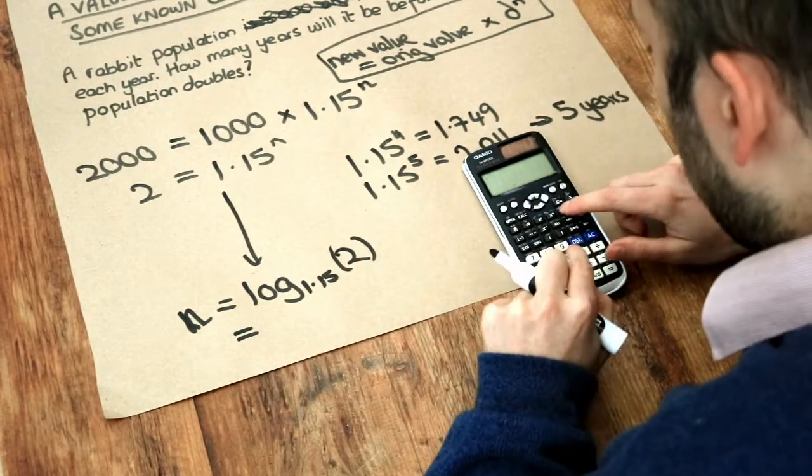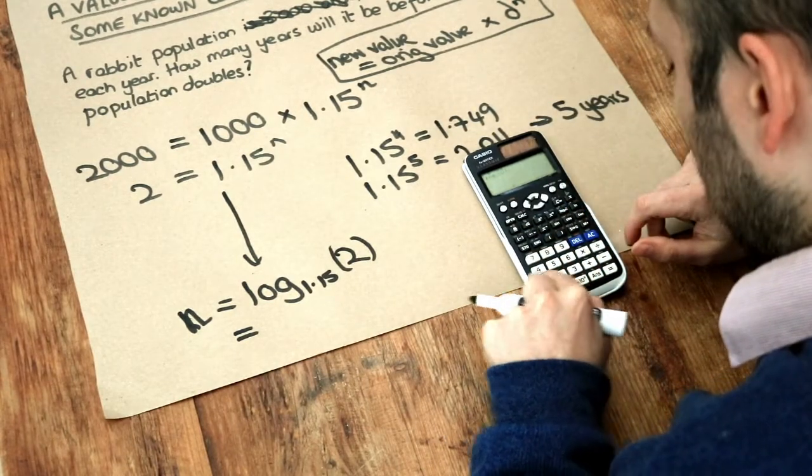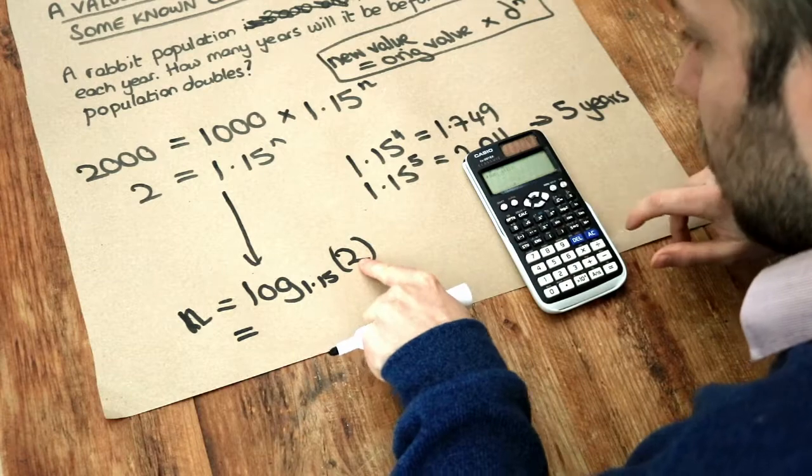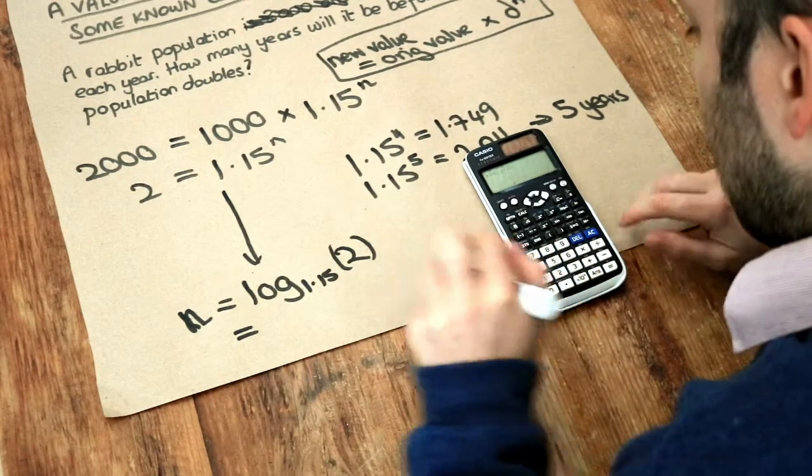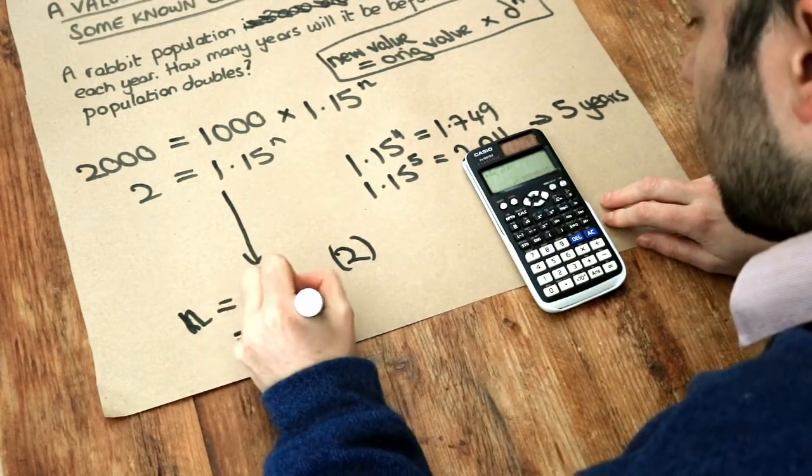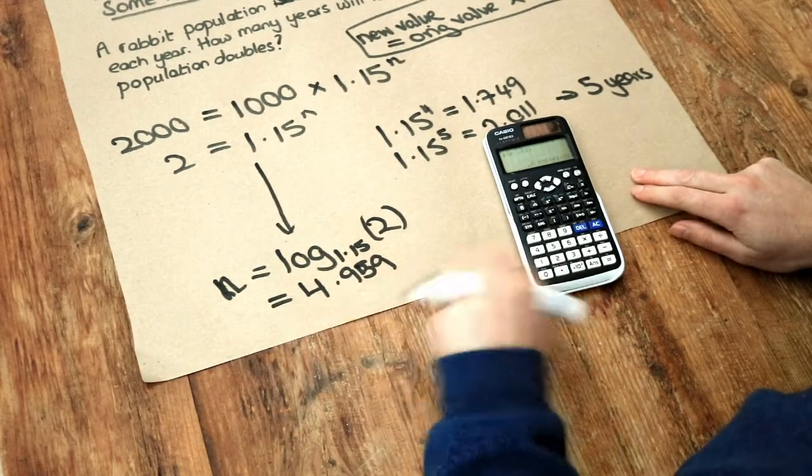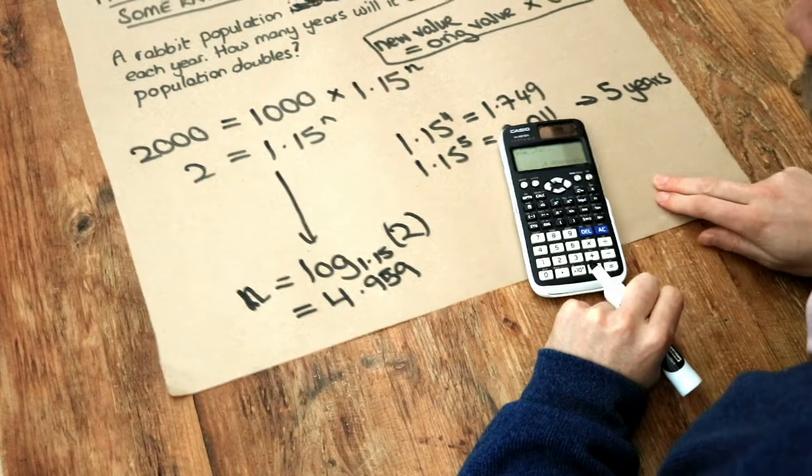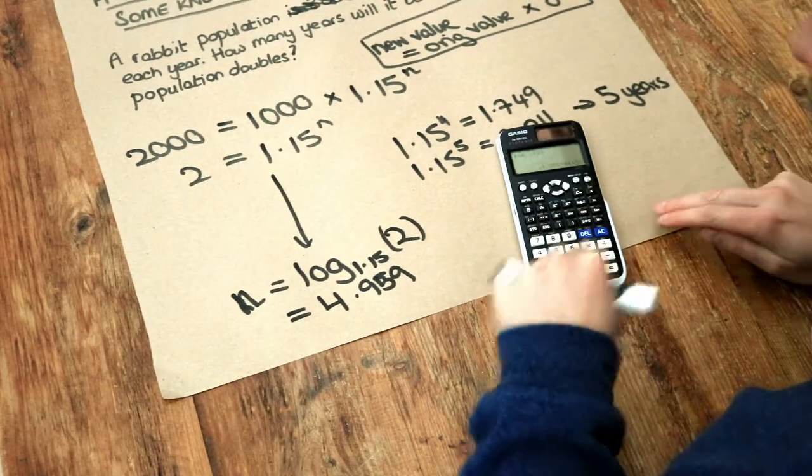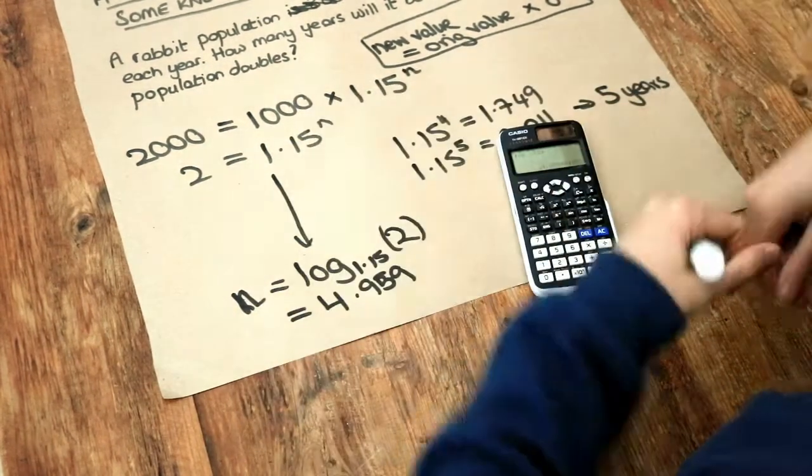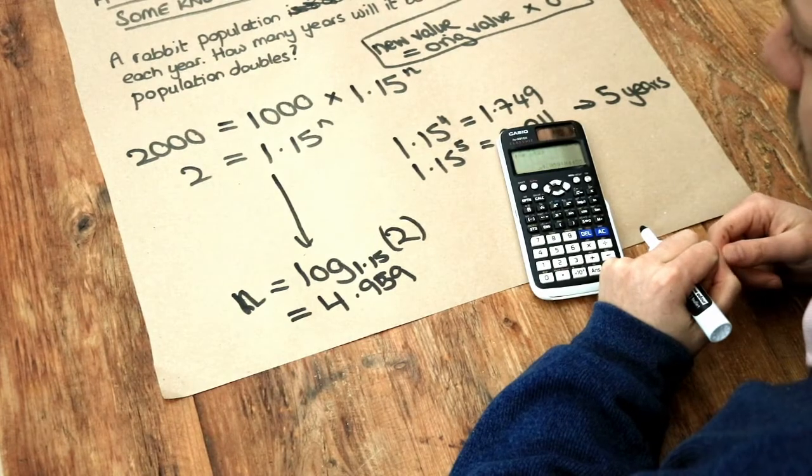And if you put it on your calculator, so log base 1.15, and then press the right key to put in the 2 that you have over here. And that gives you 4.959. So we can see after exactly 4.959 years, the rabbit population would have reached double. And that means after 5 years, we would have definitely got past double.